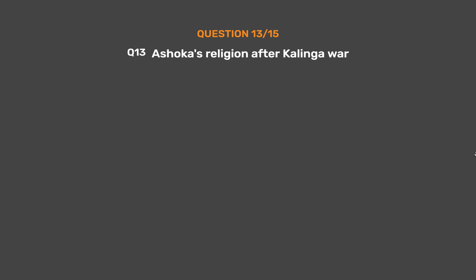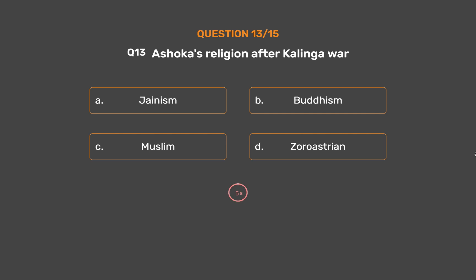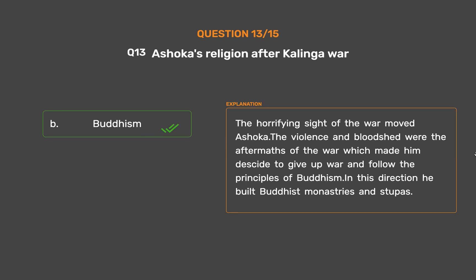Question No. 13. Ashoka's religion after the Kalinga war. Option A: Jainism. Option B: Buddhism. Option C: Muslim. Option D: Zoroastrian. The correct answer is Option B: Buddhism. The horrifying sight of the war moved Ashoka. The violence and bloodshed were the aftermaths of the war, which made him decide to give up war and follow the principles of Buddhism. He built Buddhist monasteries and stupas.